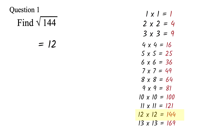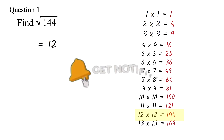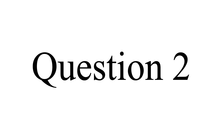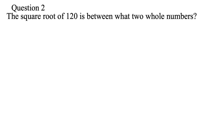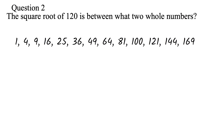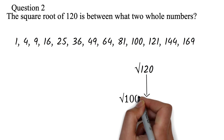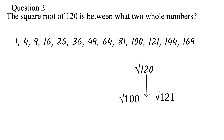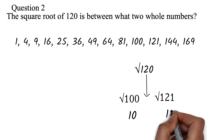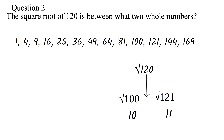A typical square root question is not that straightforward, so let's look at a common one. Question 2: the square root of 120 is between which two whole numbers? The work here is to find the perfect squares that 120 is between. Using the list of the first 13 perfect squares, 120 falls between the perfect square 100 and the perfect square 121. The square root of 120 will therefore be between the square root of 100, which is 10, and the square root of 121, which is 11. Therefore, the square root of 120 is between 10 and 11.